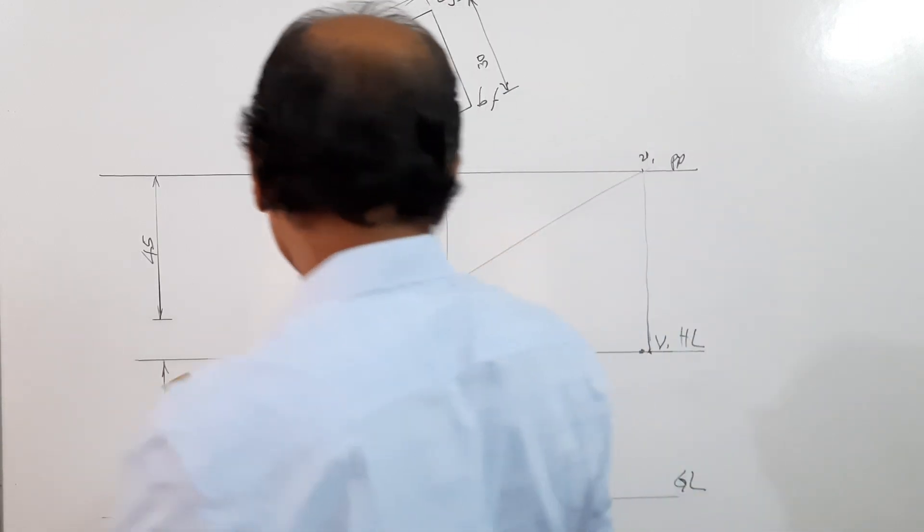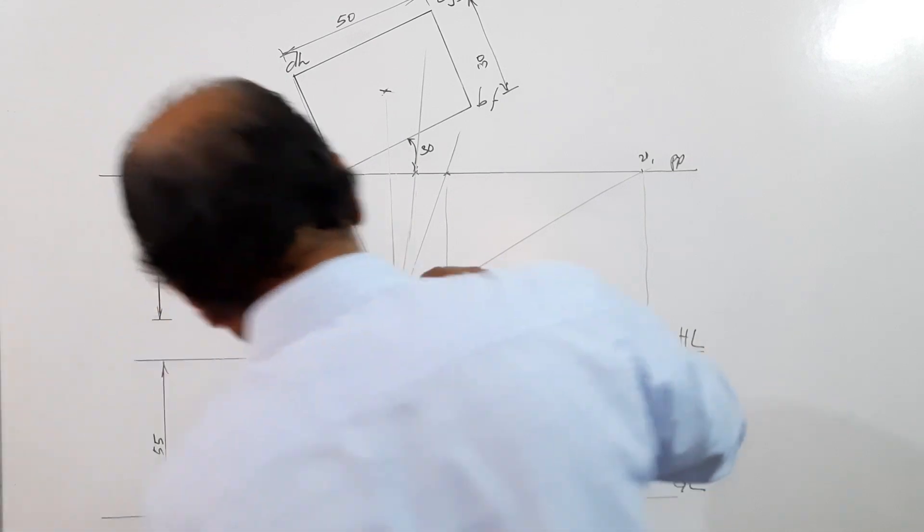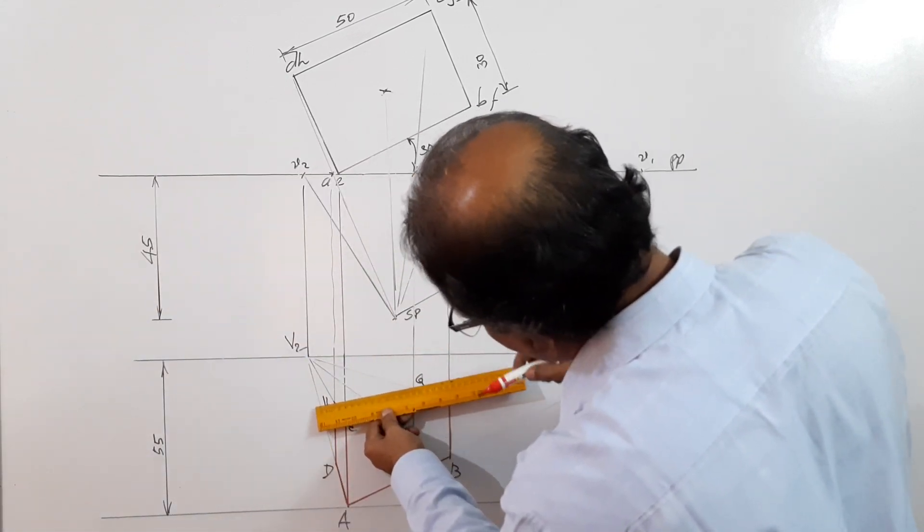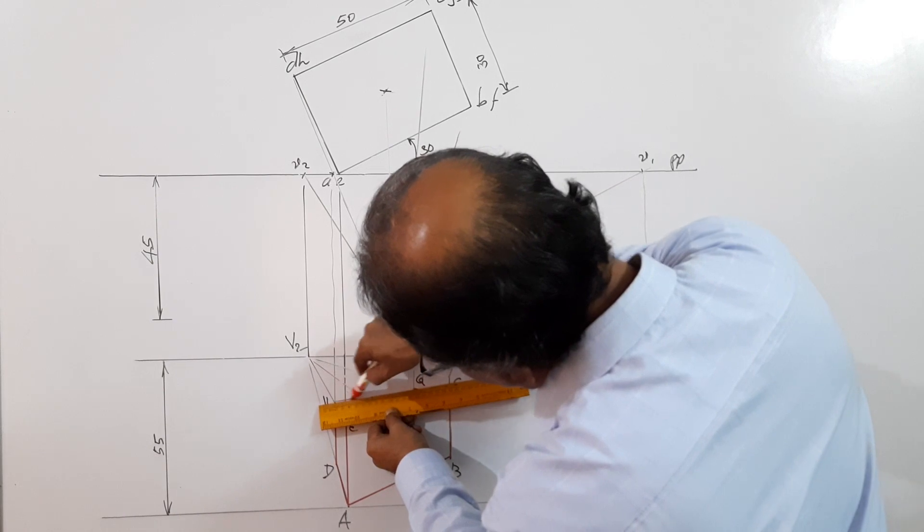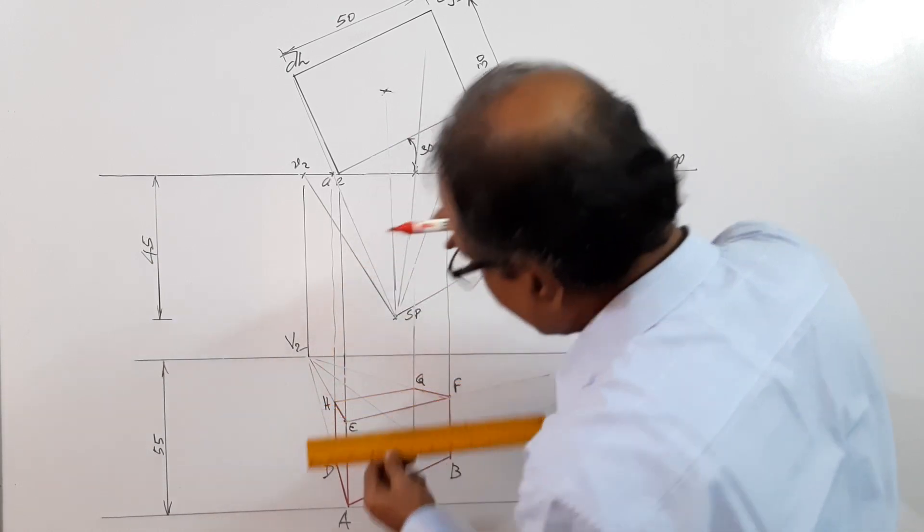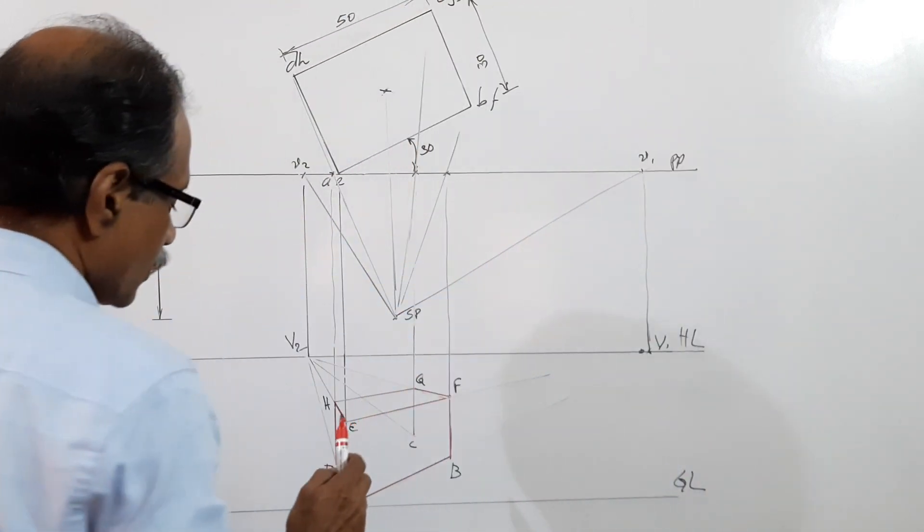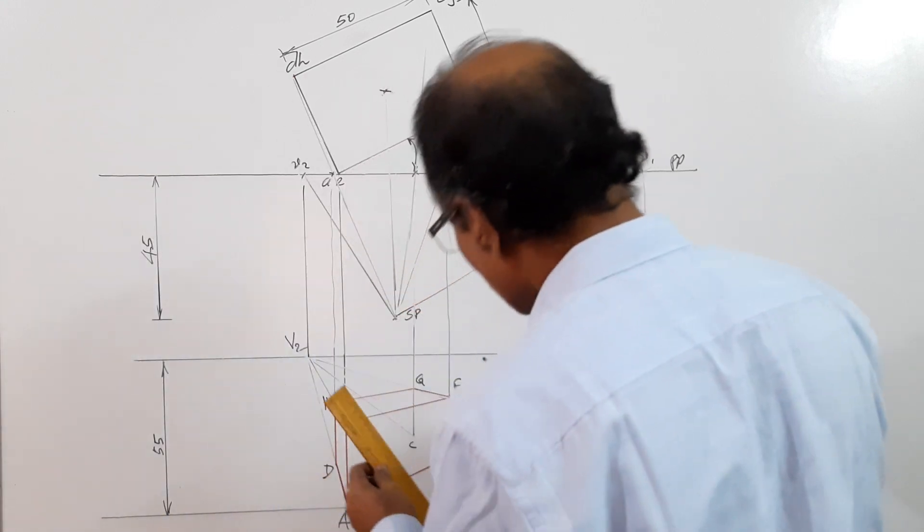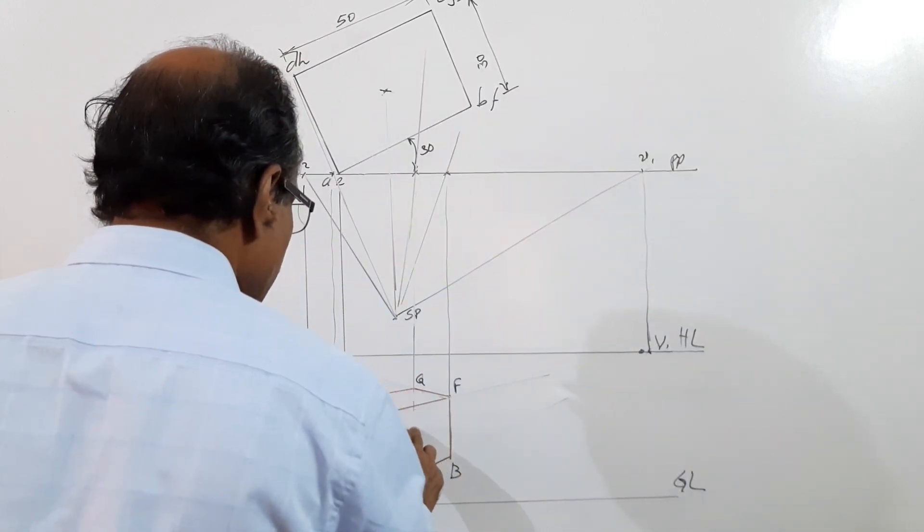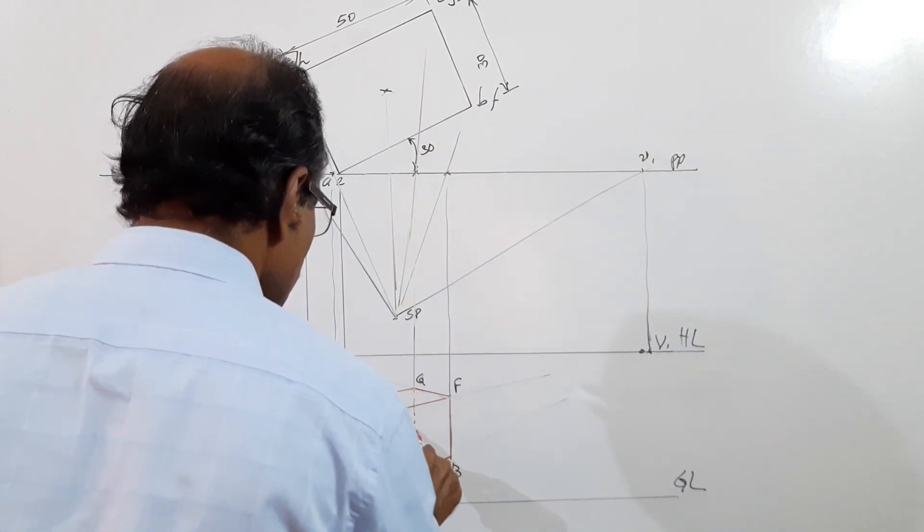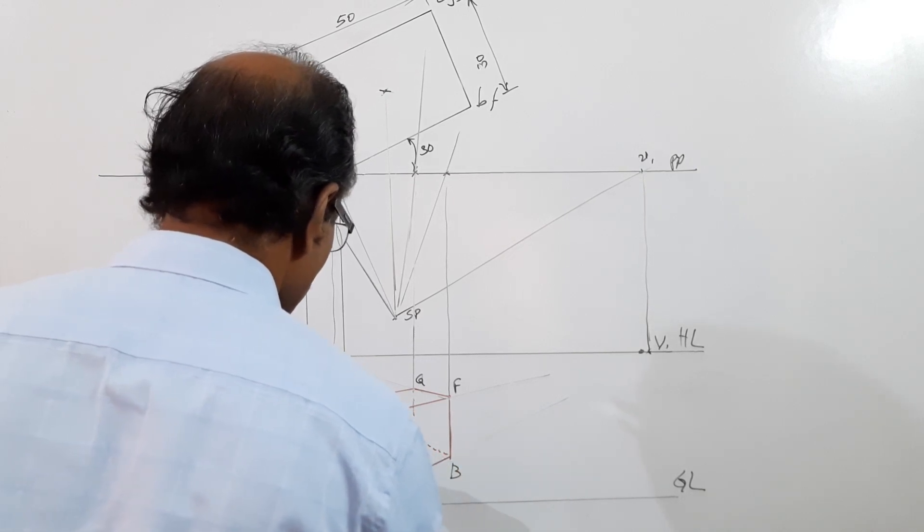Since I am not using correct instruments, there can be slight changes in the location of the points. Now what? This will be dotted, this will be dotted, and this will be dotted.